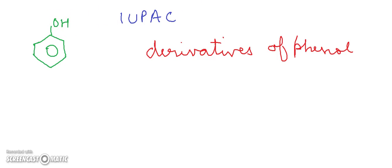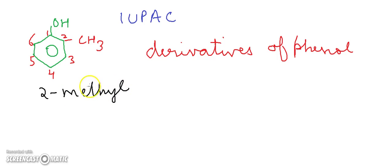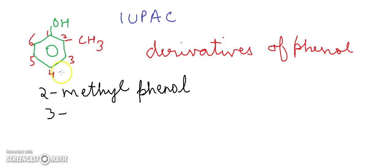Since the substituent is at the second position — numbering 1, 2, 3, 4, 5, 6 — this is position two because we always give the lowest number to the substituent. The functional group gets the highest priority, so it is given number one, and the next number goes to the substituent. Here CH3 is present at the second position, so the name of this compound is 2-methyl phenol. If the methyl group is at the third position, the name is 3-methyl phenol; at the fourth position, it is 4-methyl phenol.